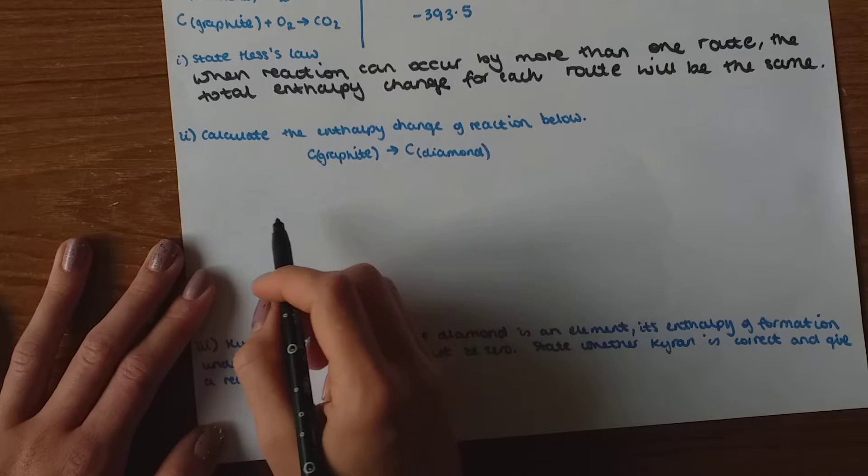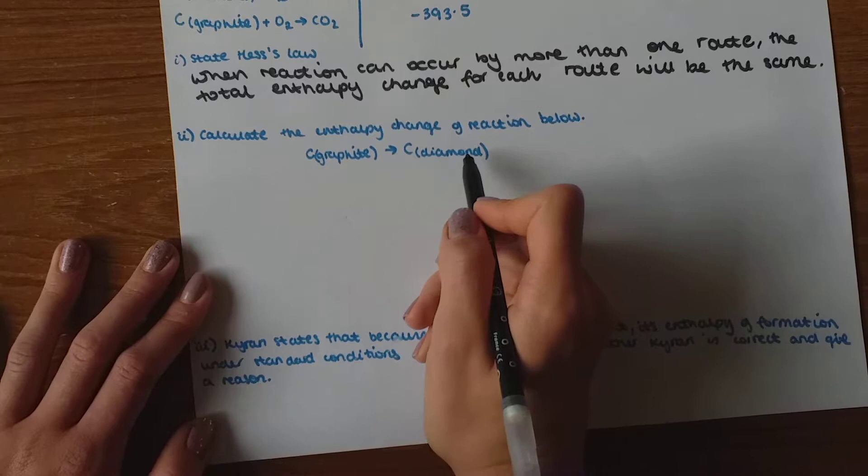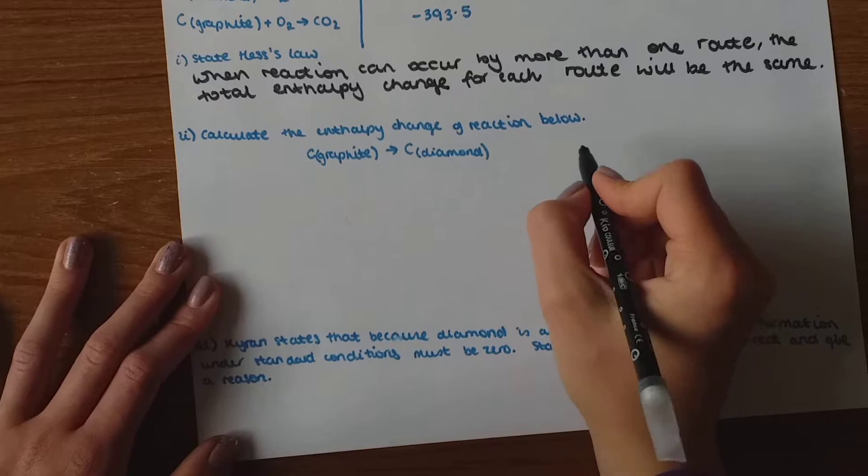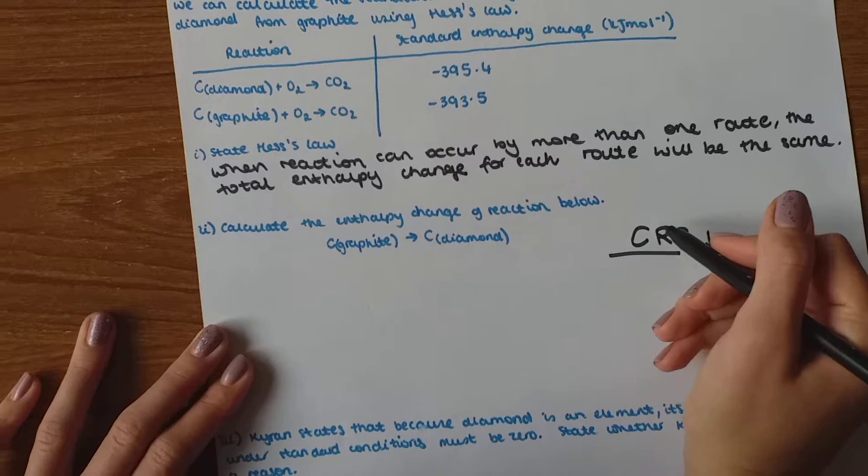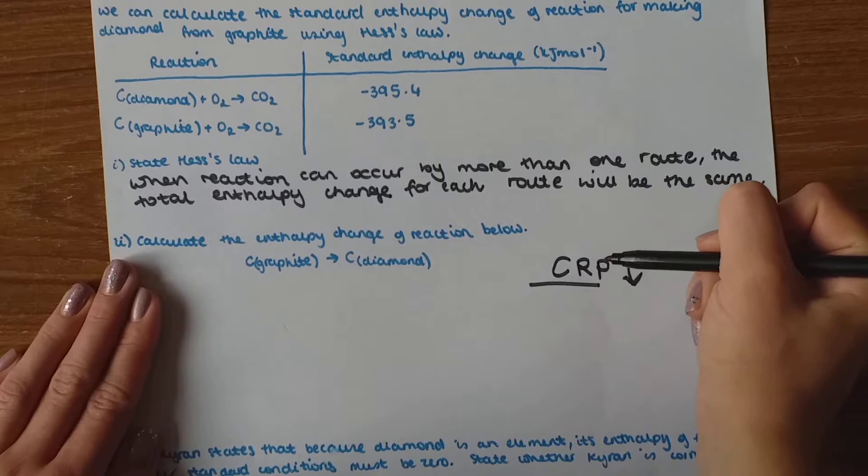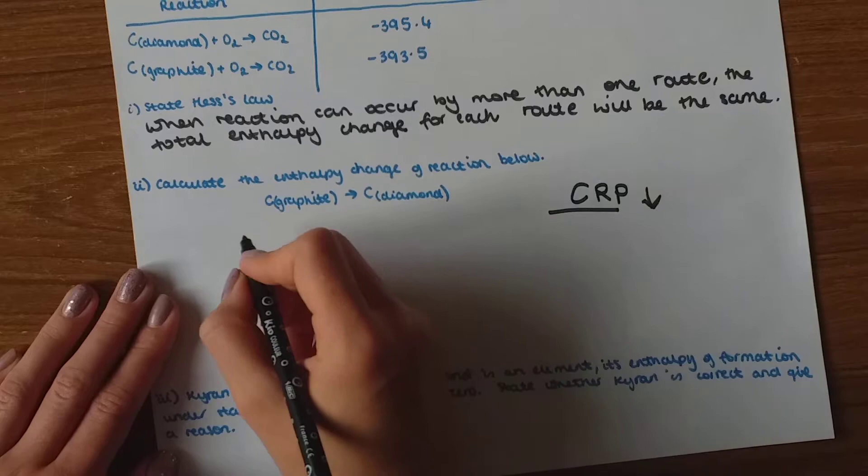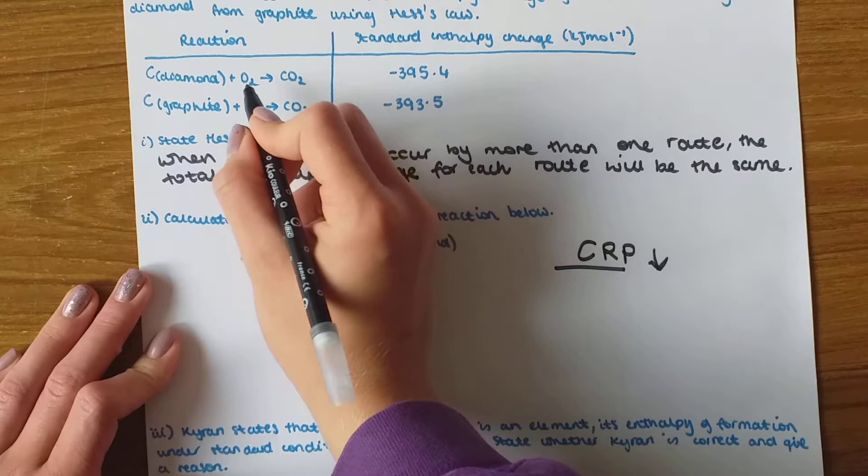So the next part says calculate the entropy change of reaction below going from graphite to diamond. So this is CRP and the arrow going down. This means that is a combustion. We're using combustion values. Reactants minus products. The arrow going down.